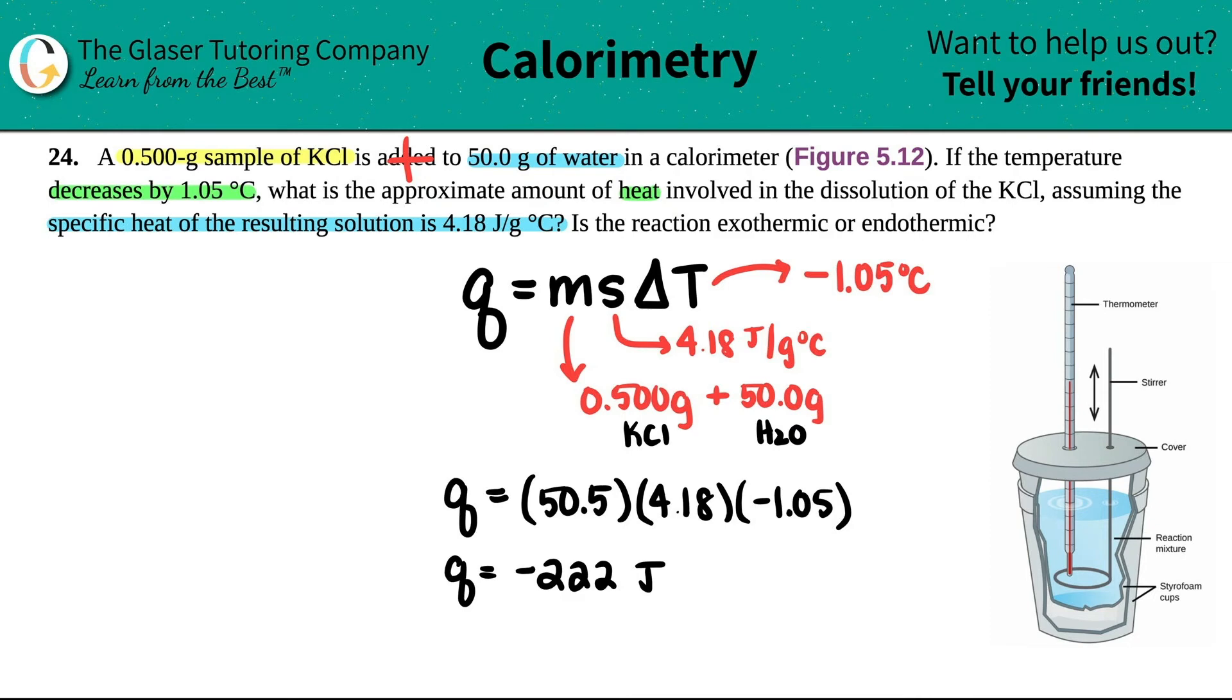Now, when you're doing solution chemistry, the Q that you're always figuring out is the Q of the solution. This is different from the Q of the reaction. They're always going to ask you for the Q of the reaction. So all we have to do is just know that the Q of the solution is always going to equal the negative Q of the reaction.